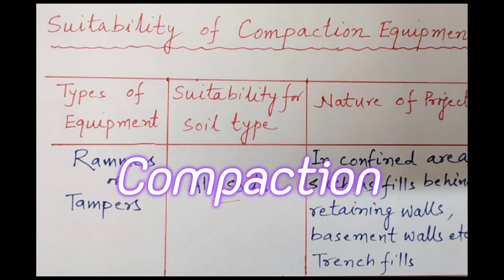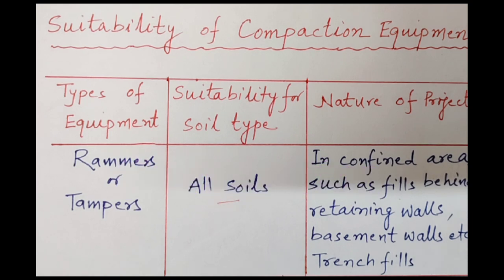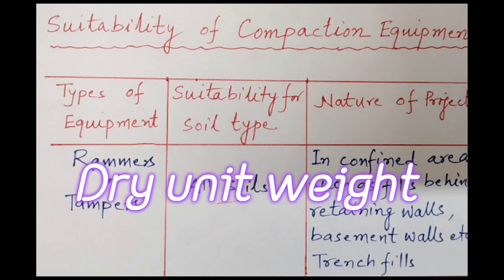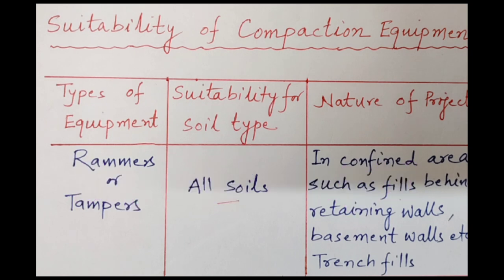It is a process by which the soil grains get rearranged more closely. The volume of air voids get reduced and the density of the soil increases. I want to add one more thing: the degree of compaction of a soil is measured in terms of dry unit weight — that is, the amount of soil solids that can be packed in a unit volume of the soil.